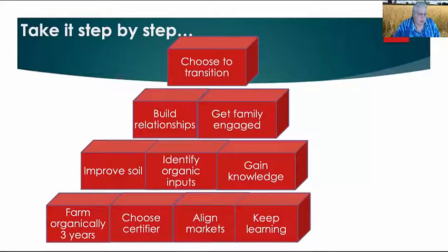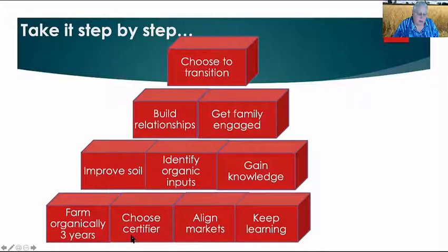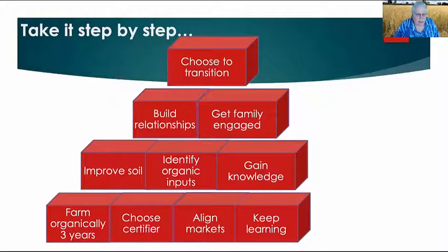Get your family engaged — those are very basic steps. Then you start on the tangibles: improve your soil, get a good soil test as your baseline. Identify sources of organic inputs. Gain knowledge through workshops and meetings like this one. Farm organically for three years using organic practices, then choose your certifier. Certifiers can come from anywhere in the U.S. — there are no certifiers in Michigan, but choose any that is USDA-certified. Then align your markets to meet your organic products, and keep learning.